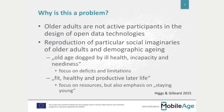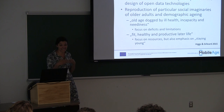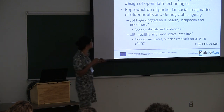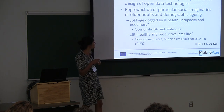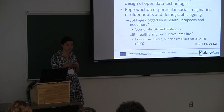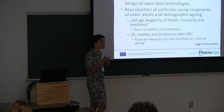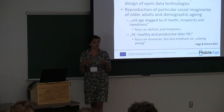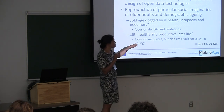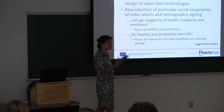Civic apps targeting older adults will very often depict them as needy and incapacitated, with a focus on deficits and limitations — mainly framed around ill-health and neediness. There is another social imaginary around ageing focused on a fit, healthy, productive later life, emphasizing staying young, mobile, and active — something we came to realize we were reinforcing in our own project. It could even be seen in the name: Mobile Age is about getting people out and being active in later life.